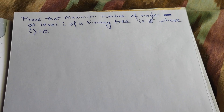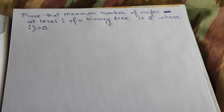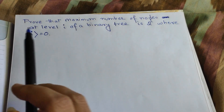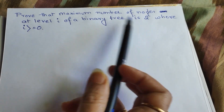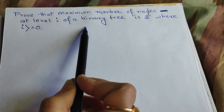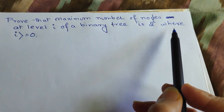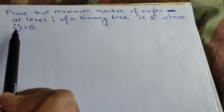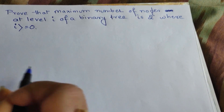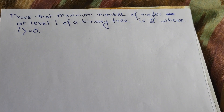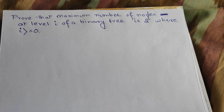Today we are going to learn a theorem of binary tree where we are going to prove that the maximum number of nodes at level i of a binary tree is 2 to the power i, where i is greater than or equal to 0. First, let me tell you what the theorem wants to prove.